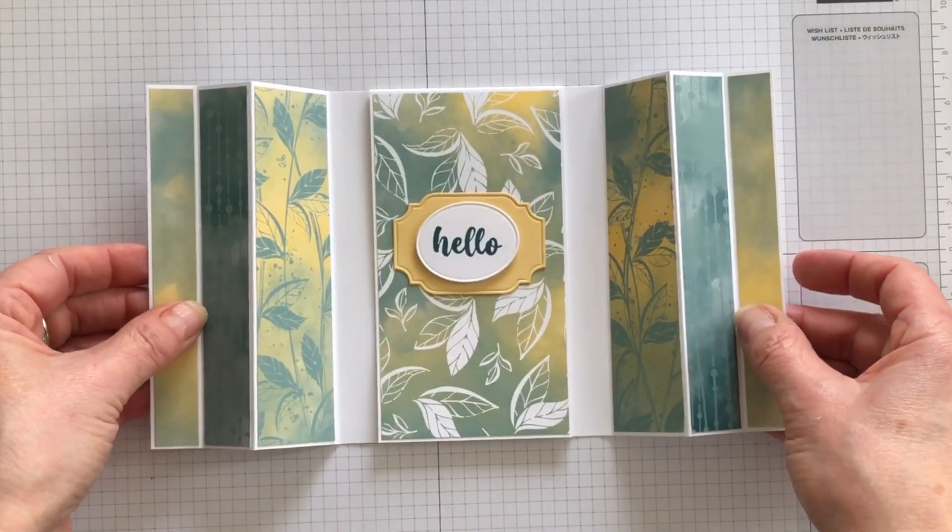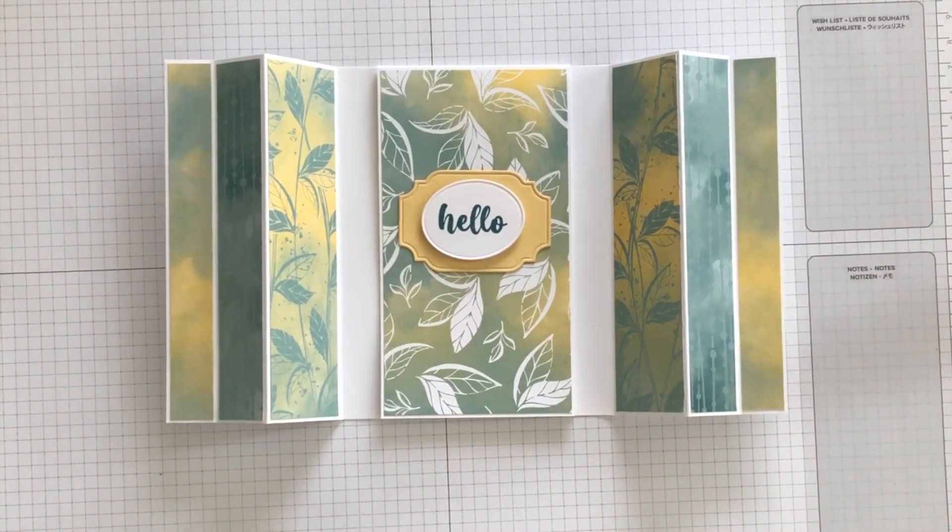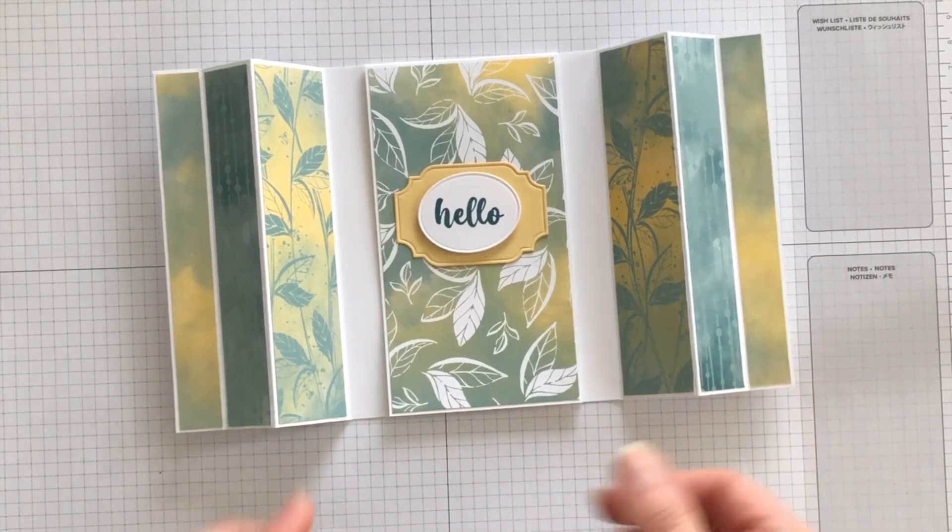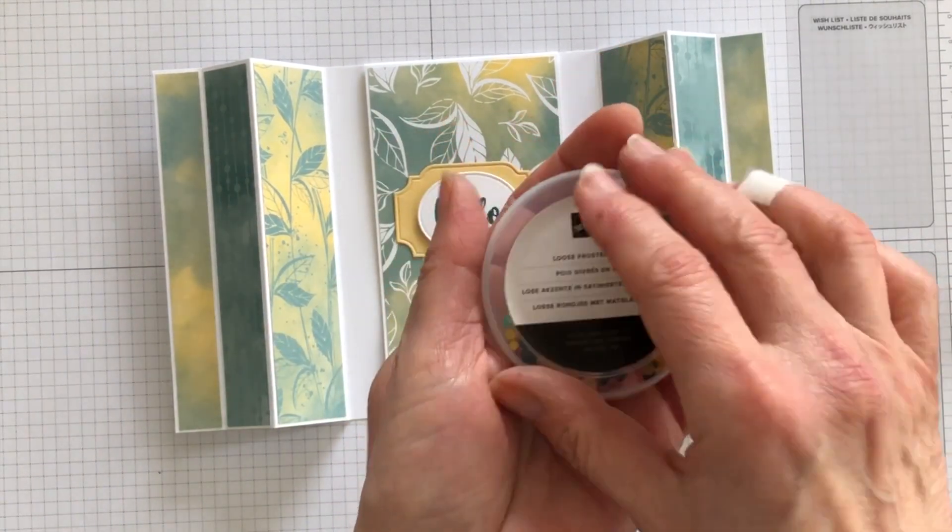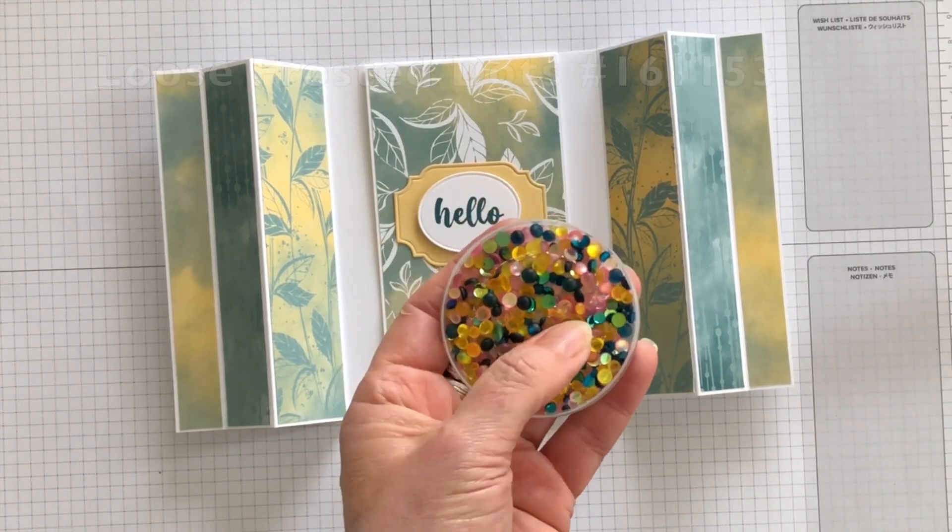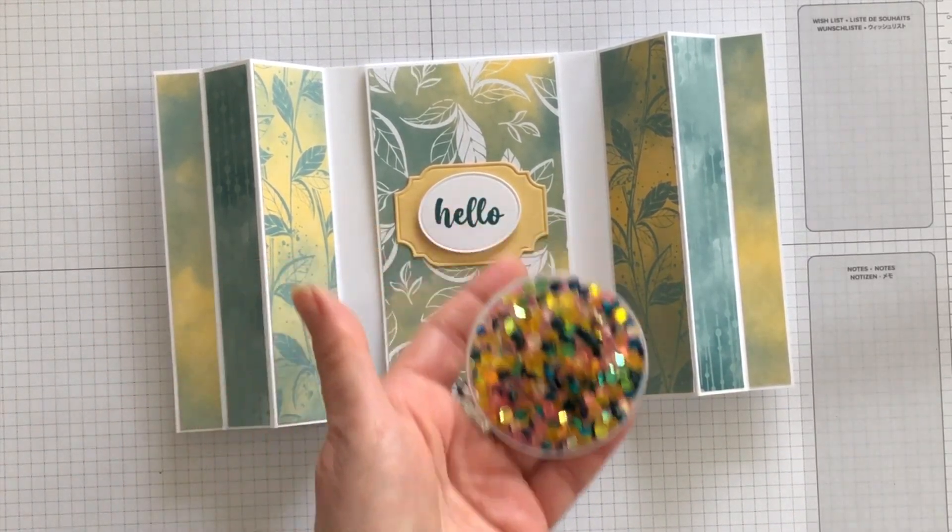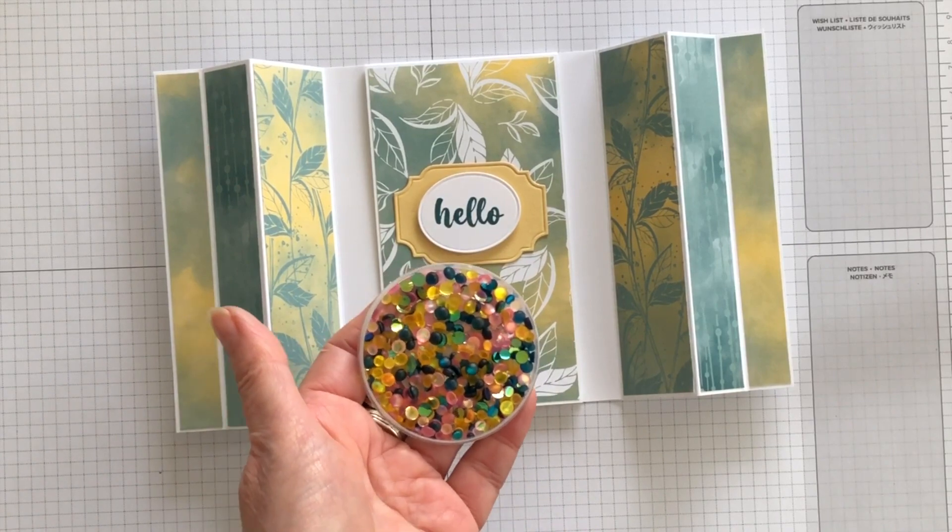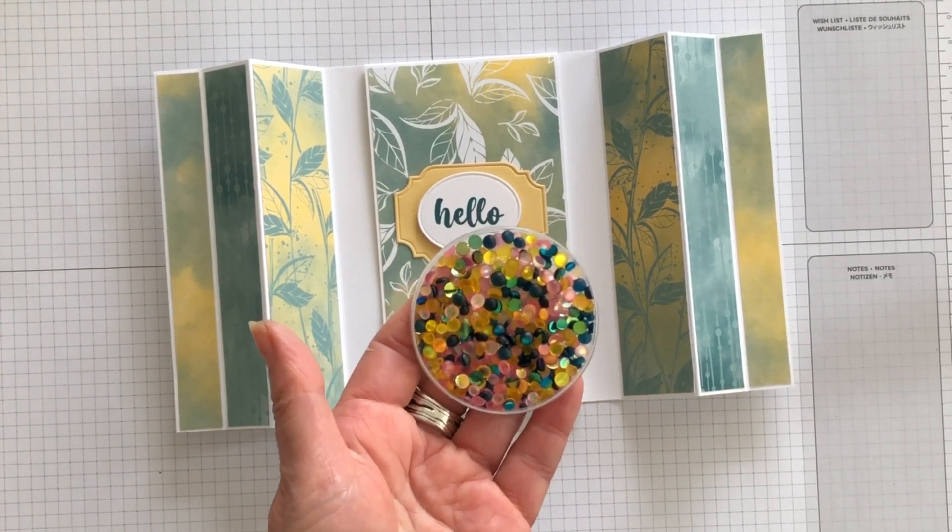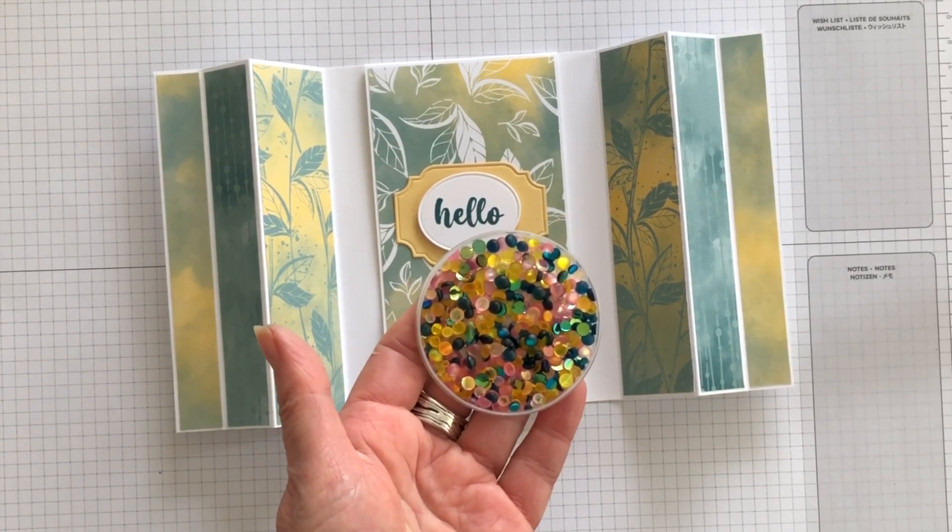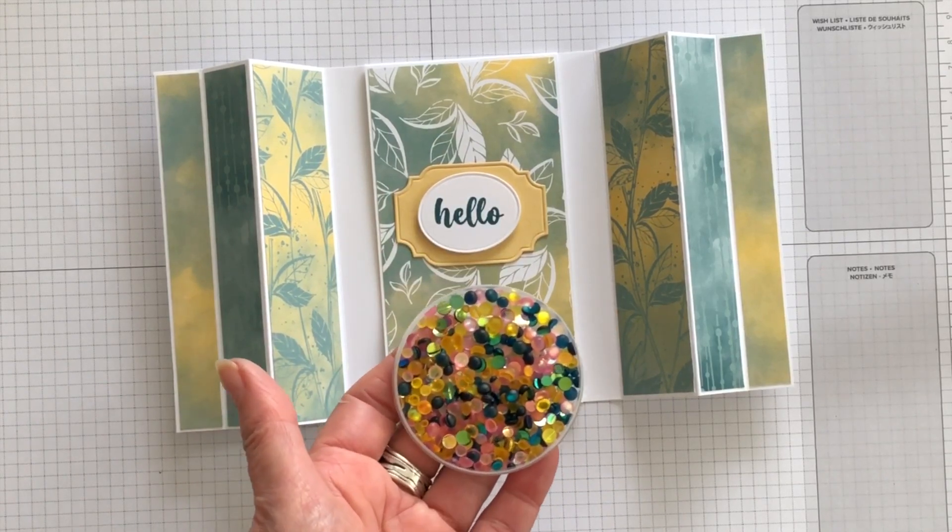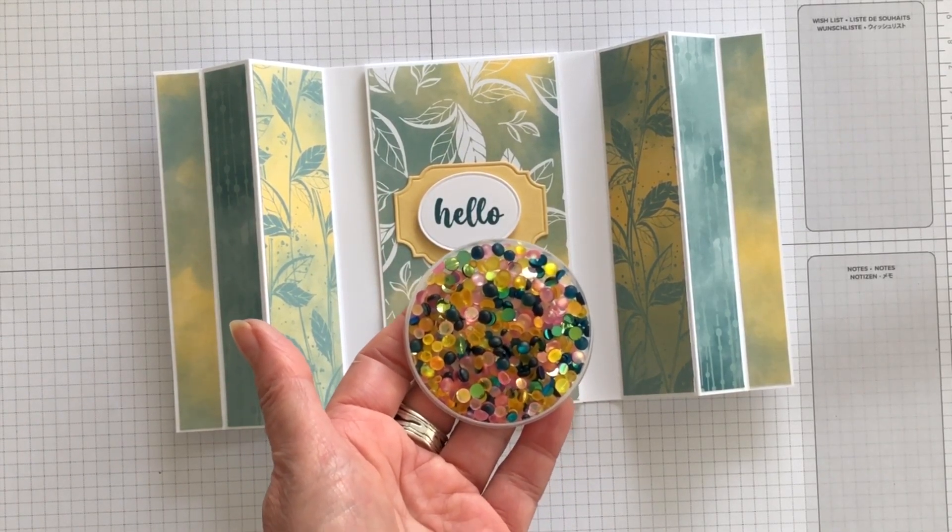So now for embellishments. As part of the Irresistible Blooms collection, there are these loose frosted dots. And guess what? The colors in this pack of embellishments match the colors in the Hello Irresistible Designer Series paper. So what I'm going to do is stop the video, attach a few of these cute little dots to my card, and I'll come back and show you what it looks like. And there we go.